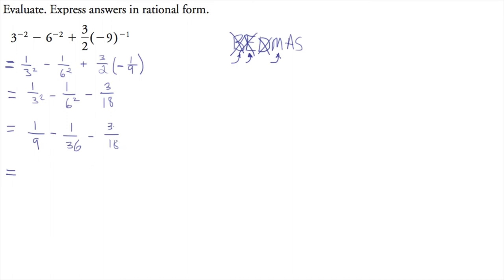So I need to multiply this by 2 to get to 36, I need to multiply this by 4 to get to 36. So we've got 4 over 36, we've got 1 over 36, and now I'm going to multiply this by 2. So we've got 6 over 36.